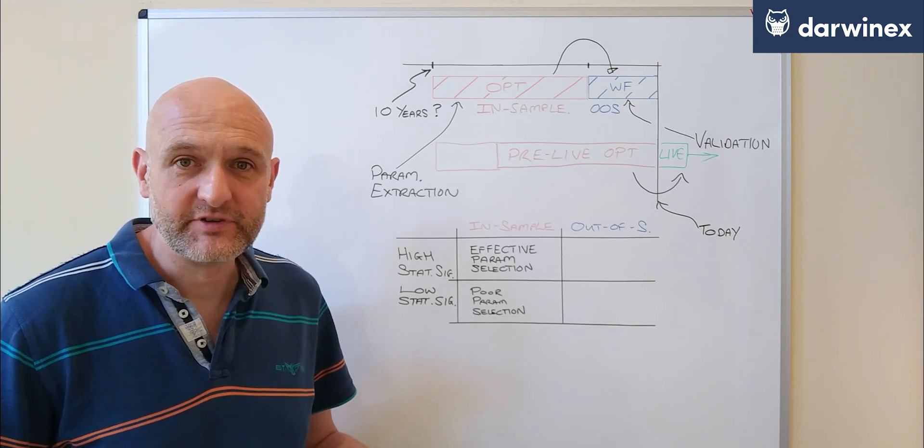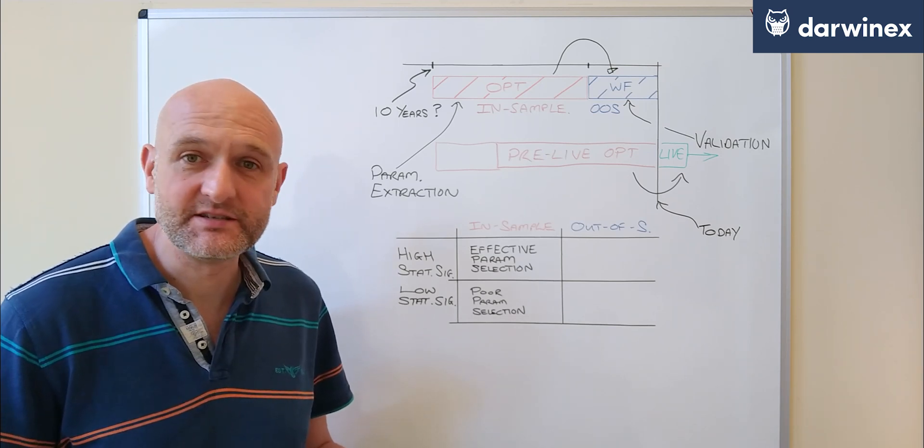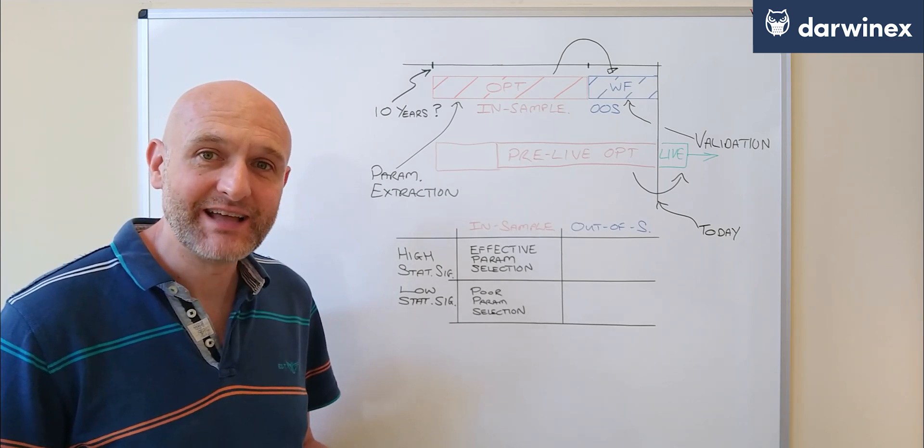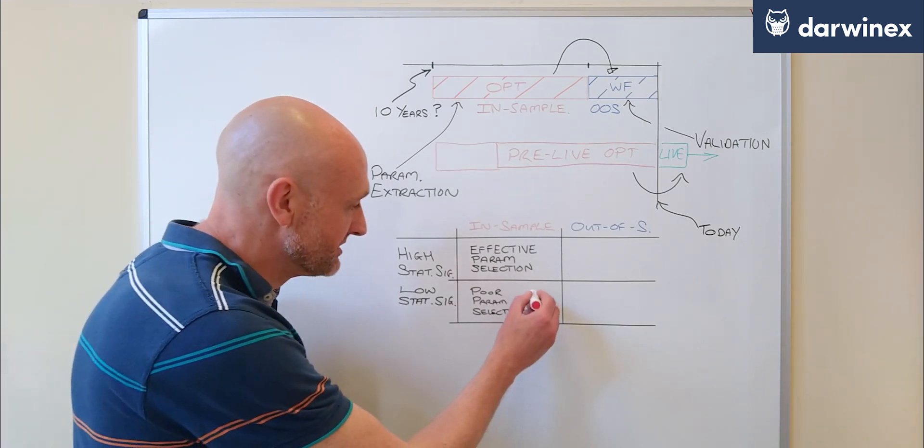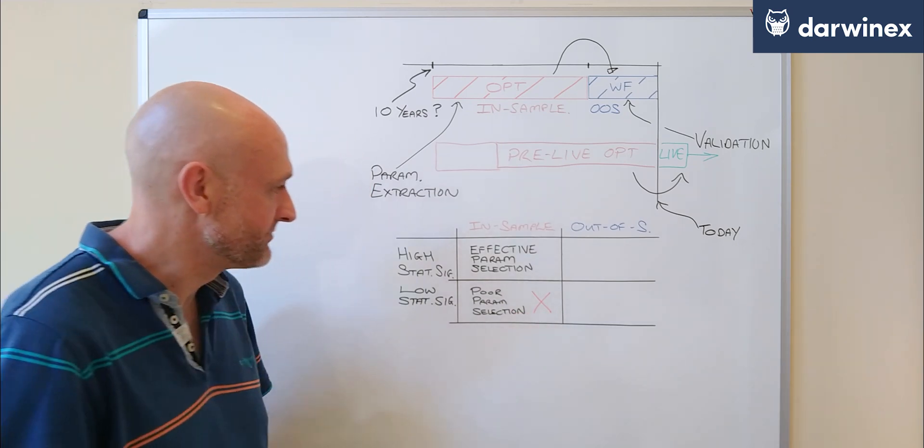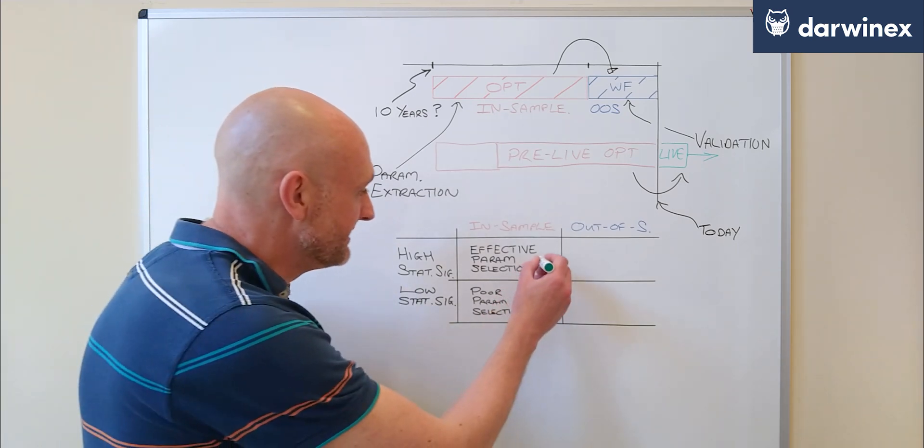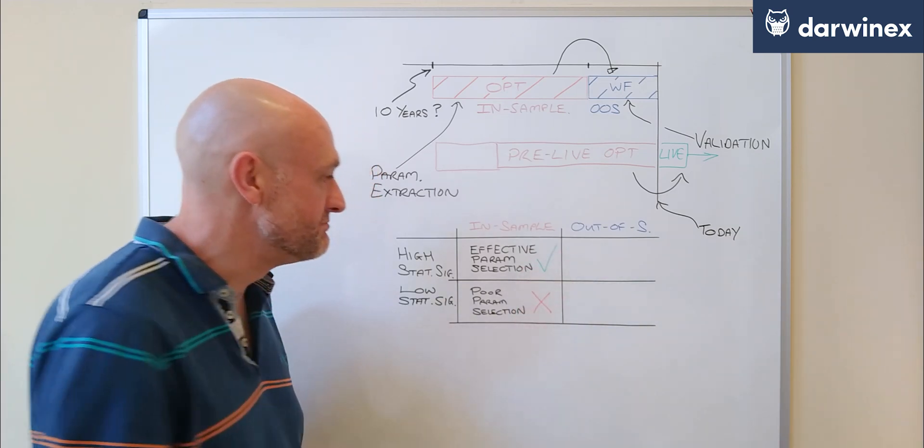This has the effect of reducing, or in some extreme cases completely eliminating, the predictive power of selecting the best parameter values from the optimization. So we need this high statistical significance at this stage in order to make that selection effective.